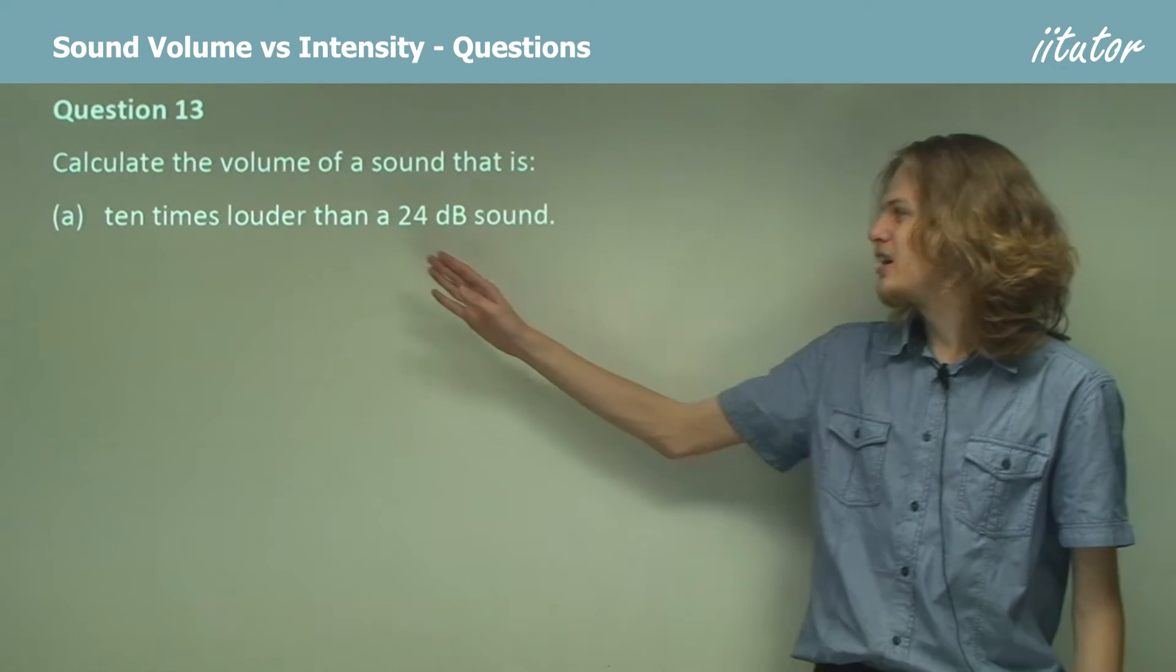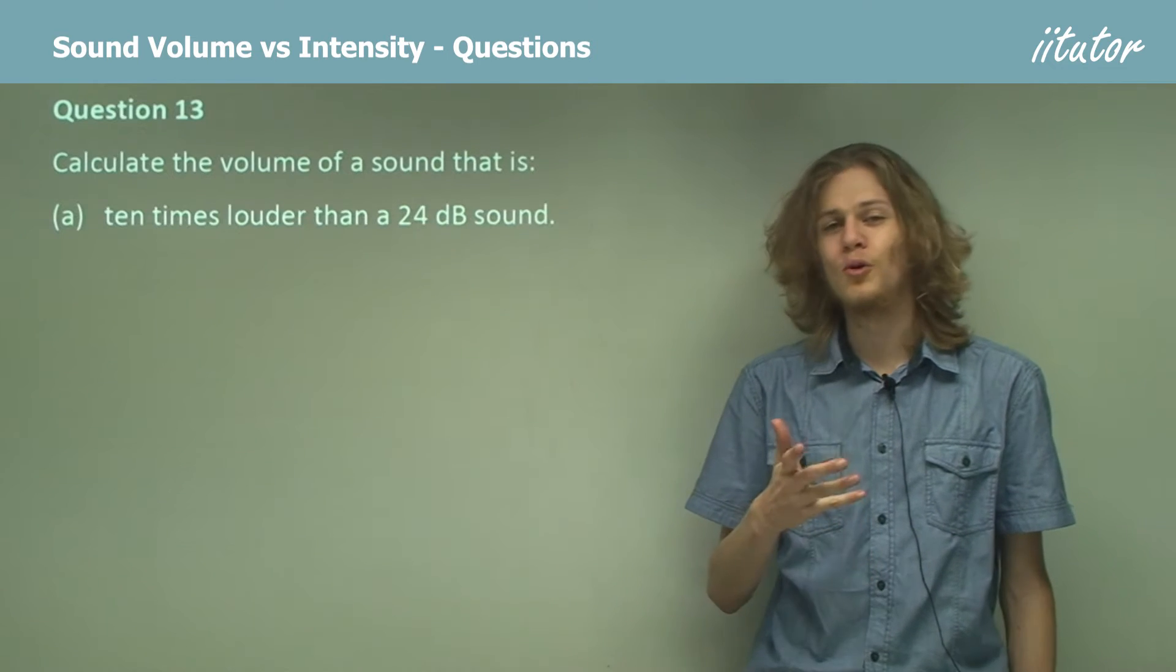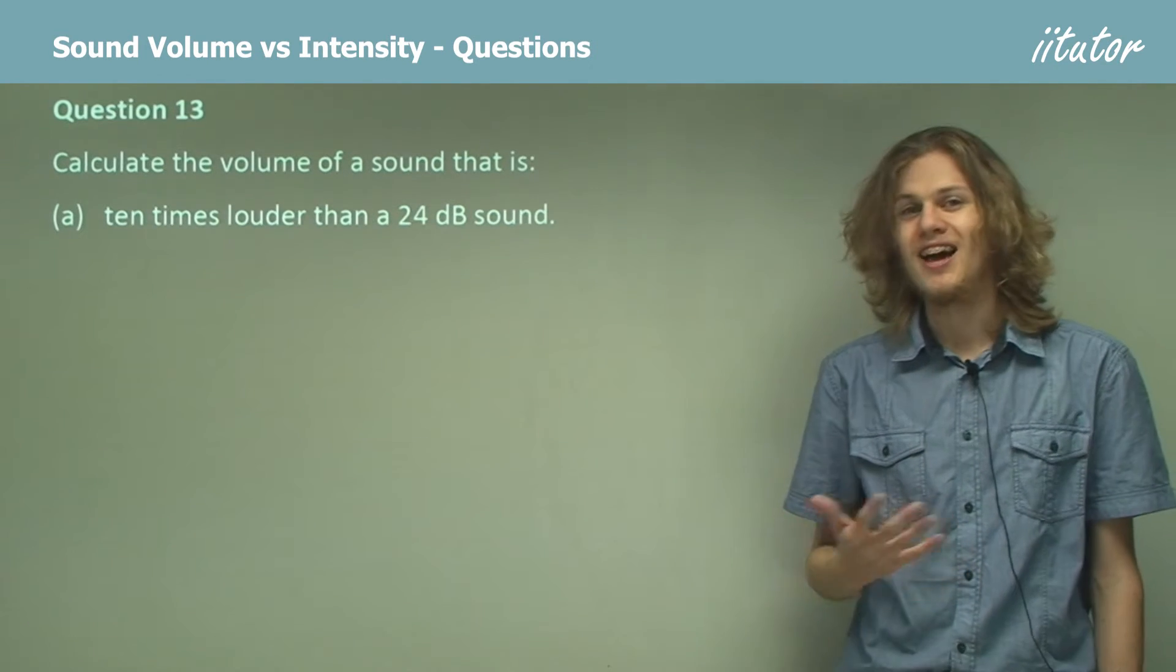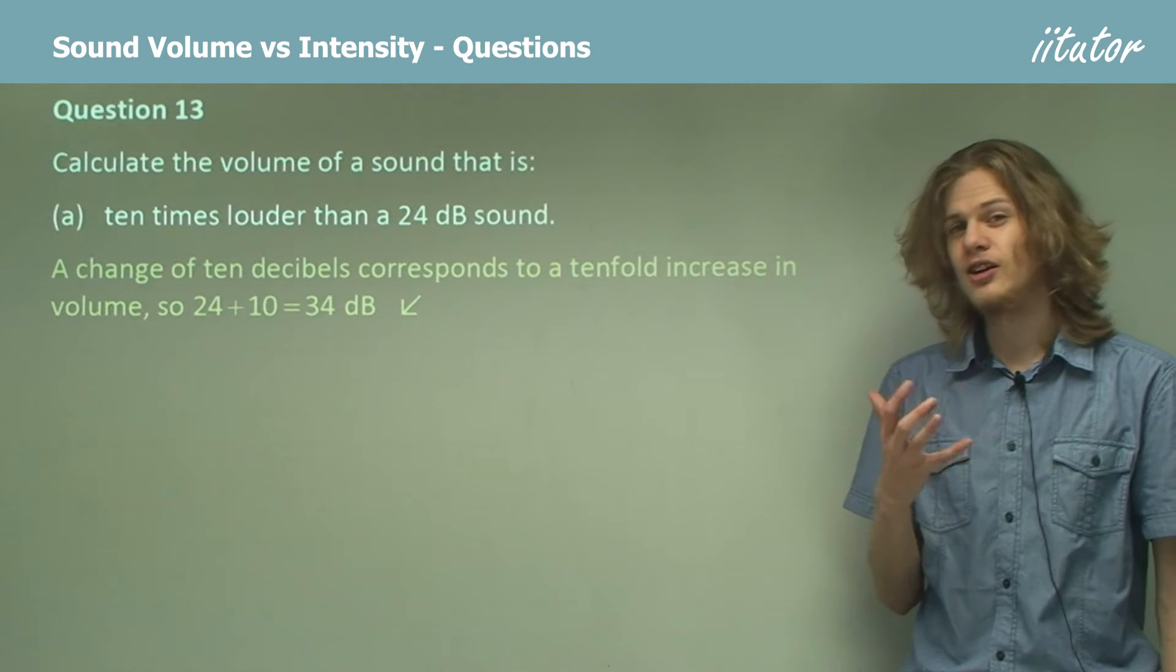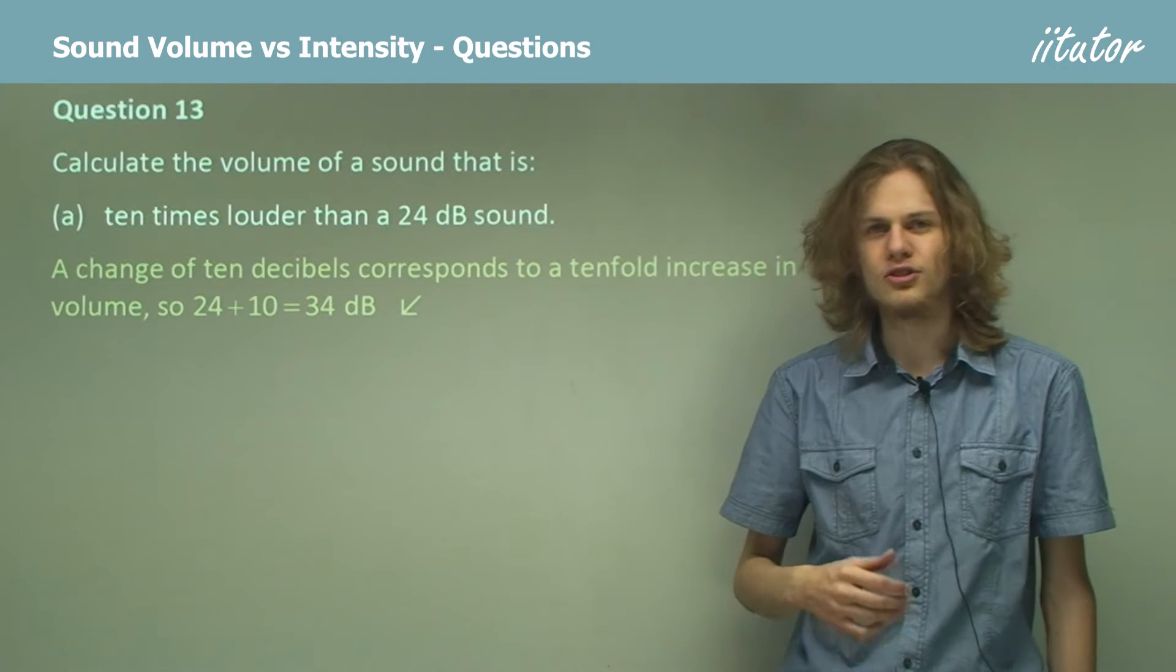So if we want to be 10 times louder, that is 10 times more intense, then all we need to do is add 10 decibels. So change in 10 decibels corresponds to something 10 times louder. We end up with a sound that is 34 decibels.